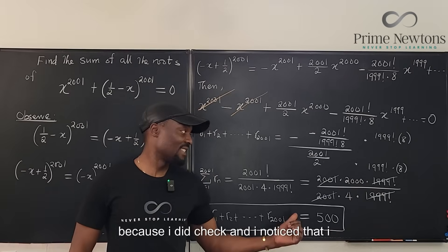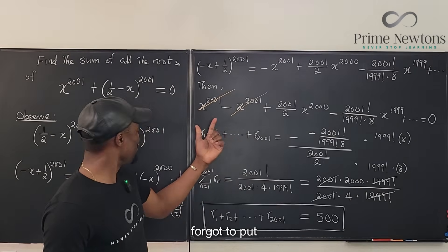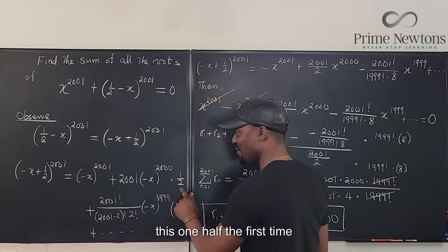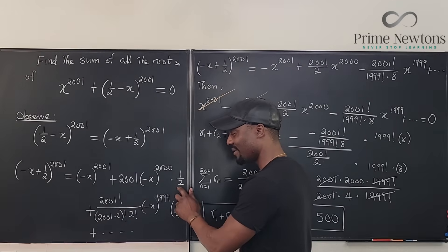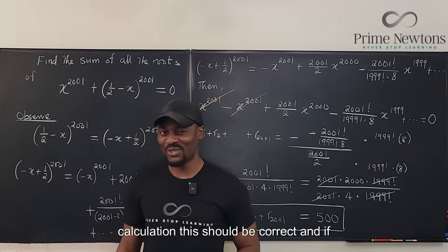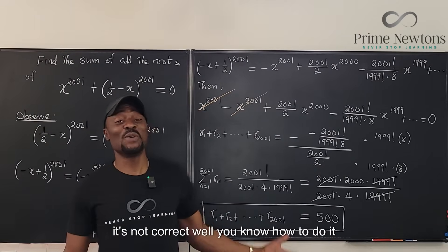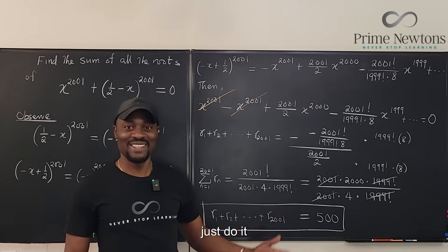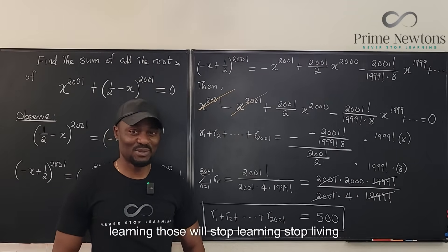I did check and noticed that I forgot to include the 1/2 — which was my b — the first time, which is why I initially got 250. This should be correct now, and if it's not, well, you know how to do it — just do it yourself. See you in the next video. Never stop learning; those who stop learning stop living. Bye.